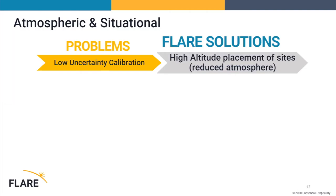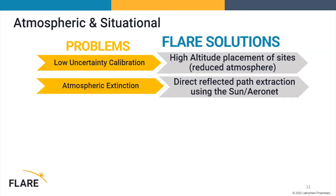Some other things Flare can help with: atmospheric and situational problems. We believe we can lower uncertainty with Flare because we can deploy these where they are best utilized. The best place to put one is at high altitude — less atmosphere means less atmospheric distortion and less uncertainty. The single largest uncertainty item in the Flare uncertainty chain is the atmosphere. By lowering the atmospheric burden we believe we can get ground truth at a sub-two-percent level; we're at about 3.5% one-sigma right now. We are also getting an atmospheric extraction — measuring atmospheric extinction — similar to the Aeronet methodology, but spectrally so we can derive more information.